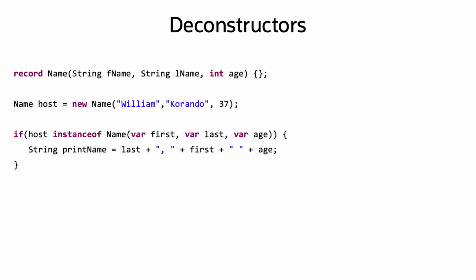Record Patterns match on position and compatible type. As long as the declared pattern variables are of compatible type, it's valid. Here, var — local variable type inference added in Java 10 — is being used instead of String, and the names of the pattern variables differ from the names of the record components.